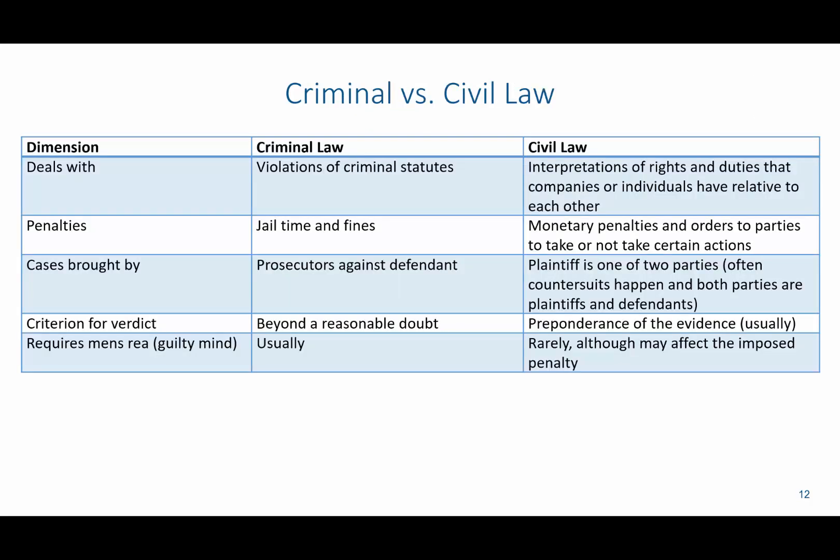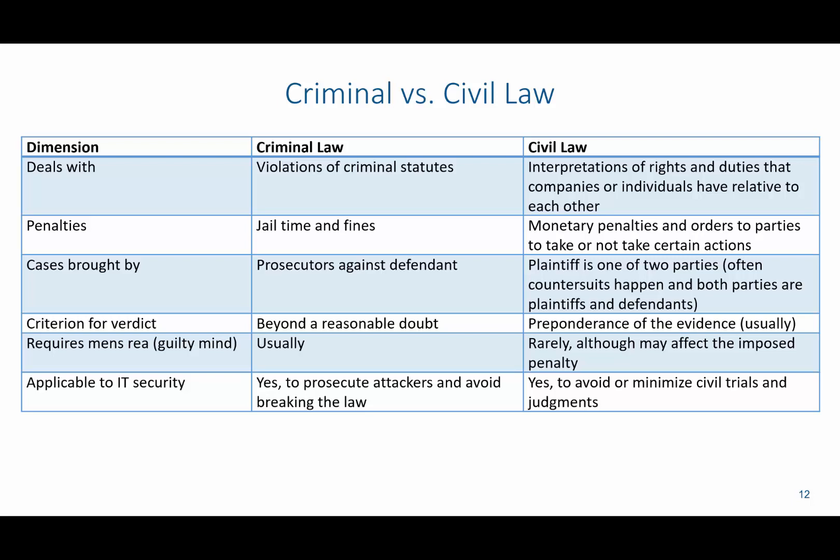There are several dimensions of criminal and civil law. Criminal law relates to criminal statutes, whereas civil law is more of an interpretation of your rights and duties. Penalties for criminal law include jail time and fines, whereas civil law is mostly monetary penalties. Criminal cases are brought by prosecutors against a defendant, while civil law has a plaintiff and a defendant. In criminal law, the criterion for verdict is beyond reasonable doubt — there cannot be any doubt before convicting someone. Civil law uses the preponderance of evidence: if 50% or more of the evidence sides with one party, the court rules in their favor. Criminal law also requires mens rea, or guilty mind, which is rarely required in civil law. In IT security, criminal law is used to prosecute attackers, whereas civil law is used to avoid or minimize civil trials and judgments.